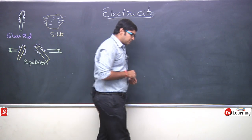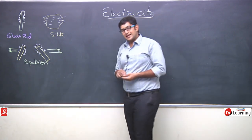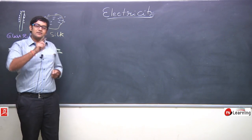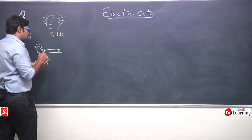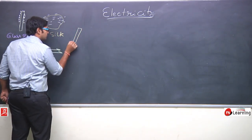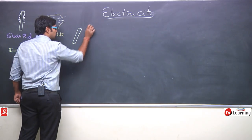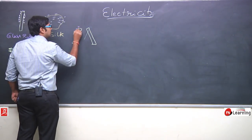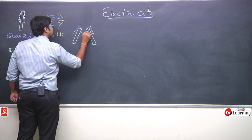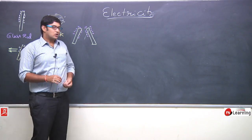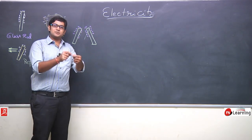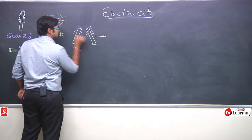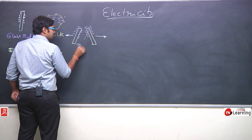Same phenomena: if we observe for a plastic rod rubbed with fur, the plastic rod gets negatively charged and the fur gets positively charged. Two plastic rods, both negatively charged, when brought near each other will repel each other — repulsion is created here too.